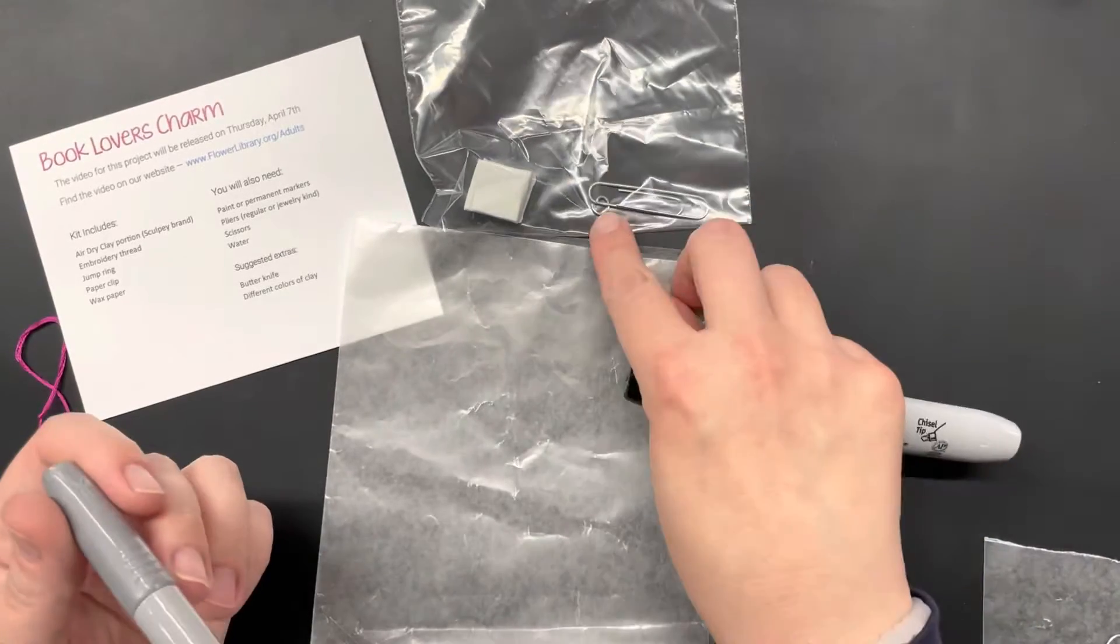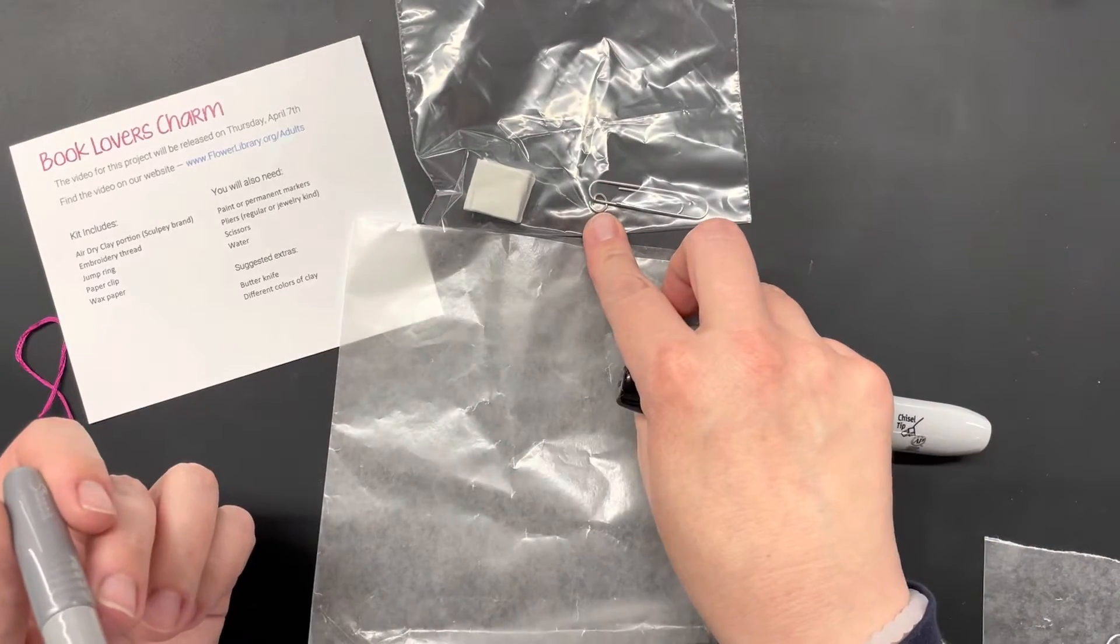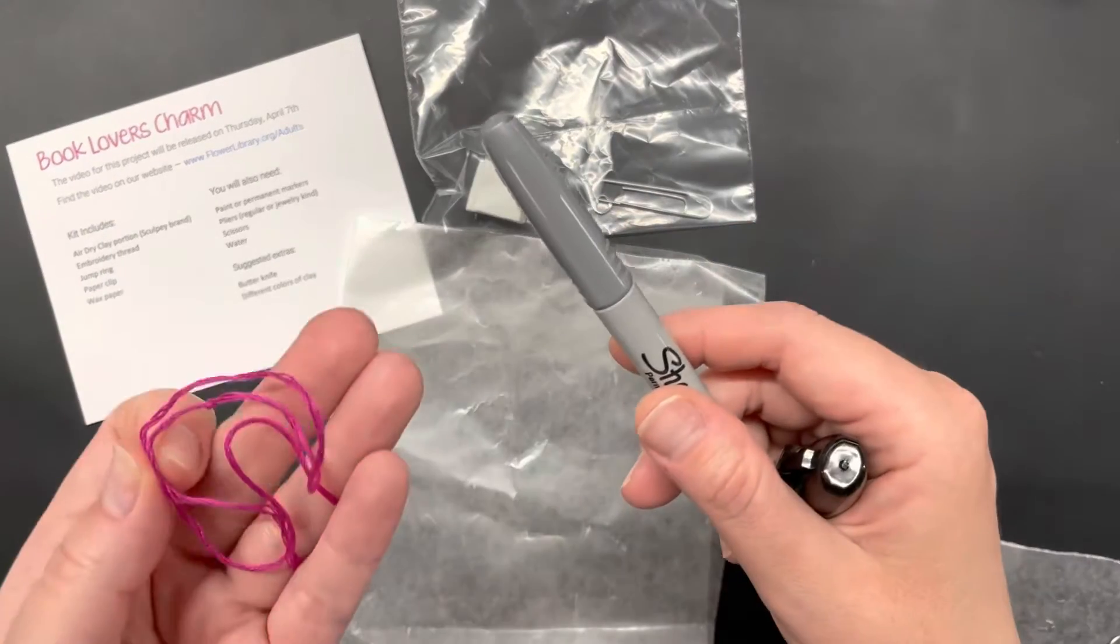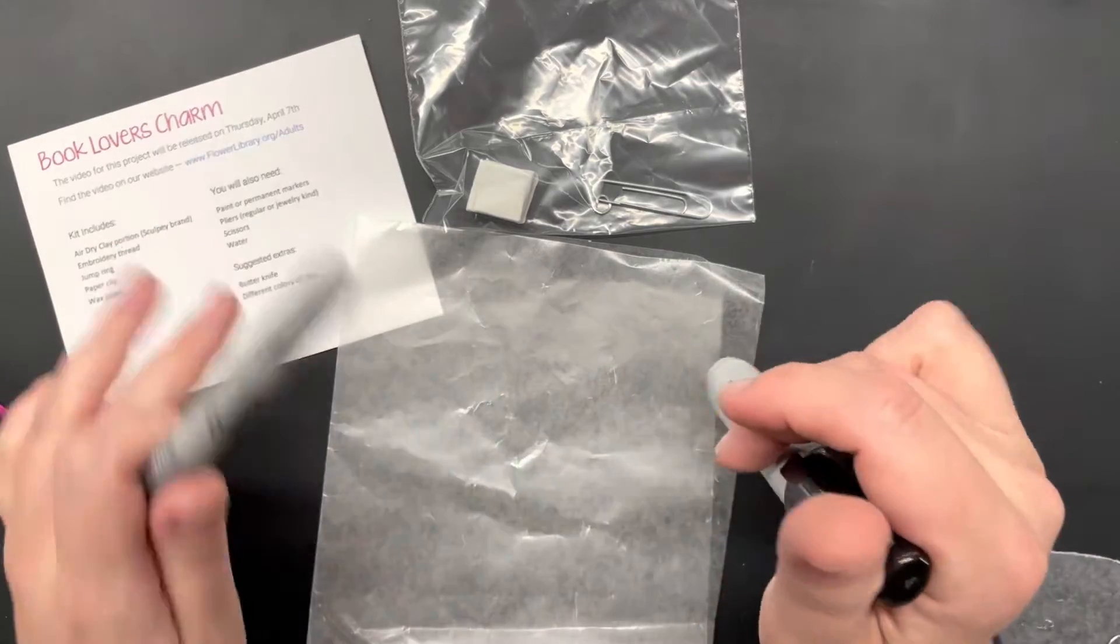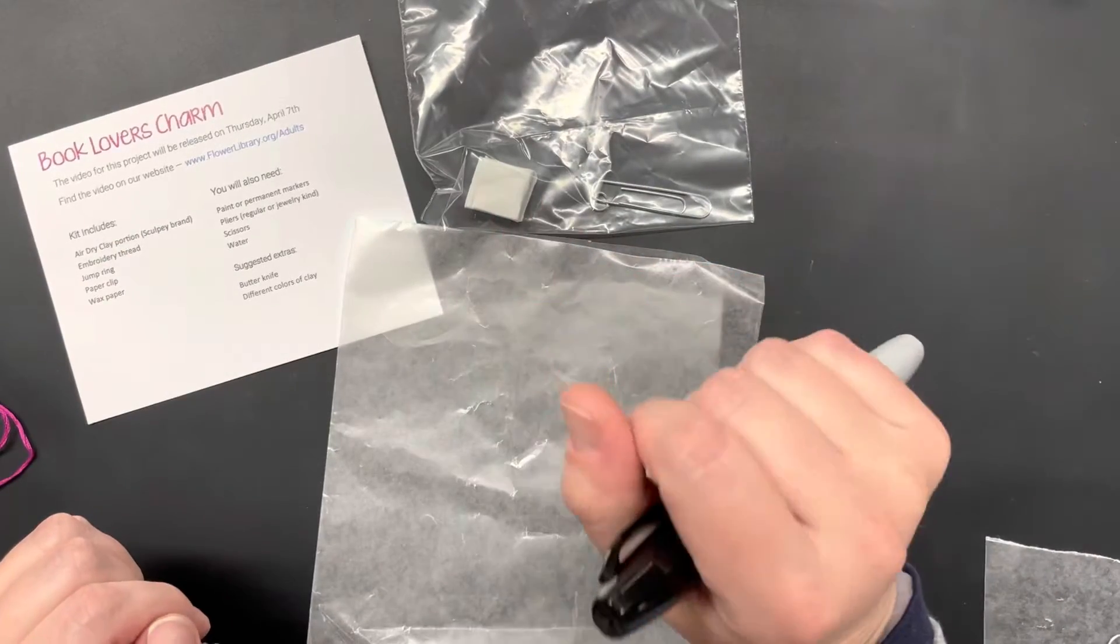Pliers are recommended if you plan to use the actual jump ring. Scissors in order to cut apart your embroidery thread once that's used, and water nearby in case you find that your clay is drying out.